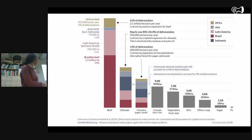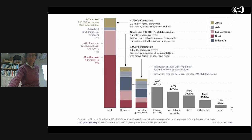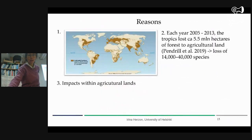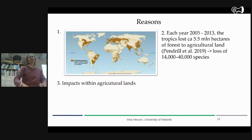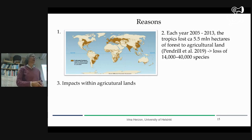Cereal is also making an impact, but as you can see, it's quite marginal. So we're still converting land into agriculture, and that's a big impact. And then of course there is impact within agricultural lands, because we are losing soil fertility, we are still polluting waters, and biodiversity is declining.